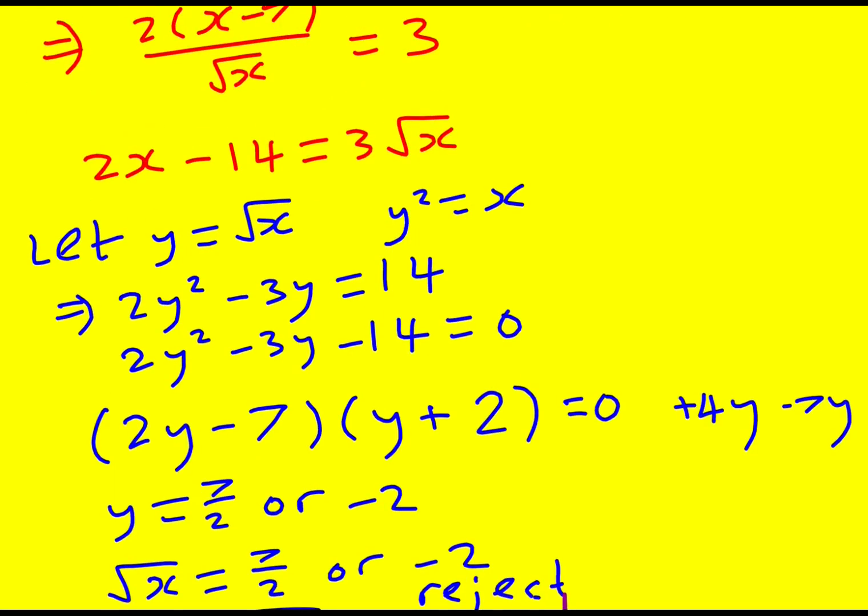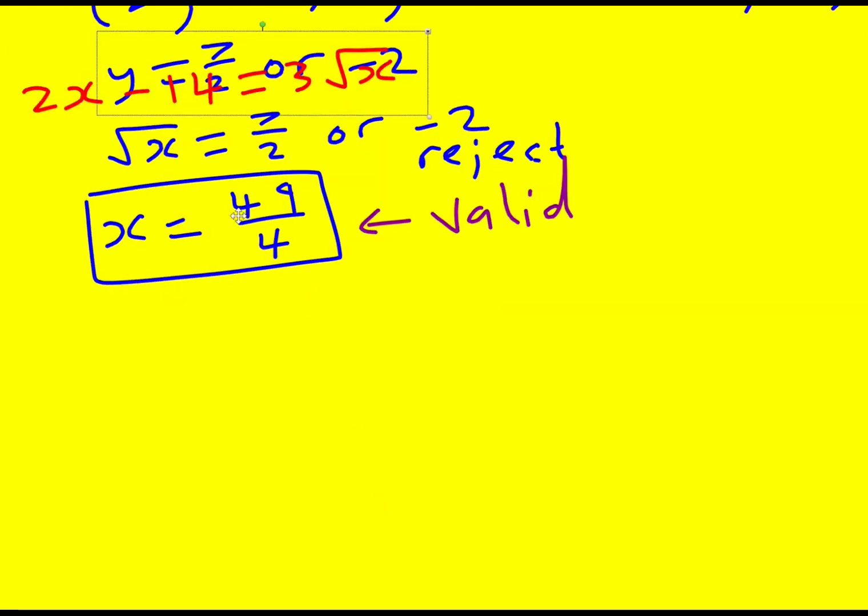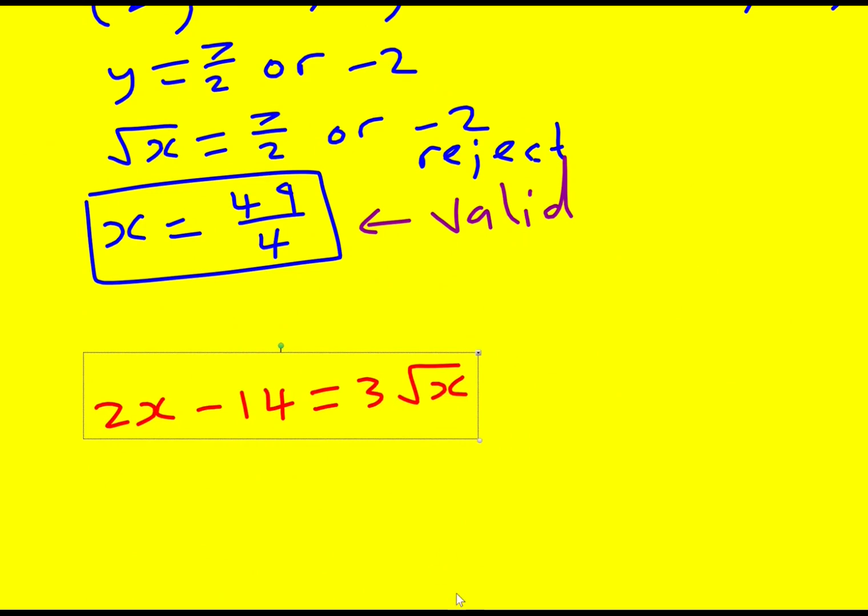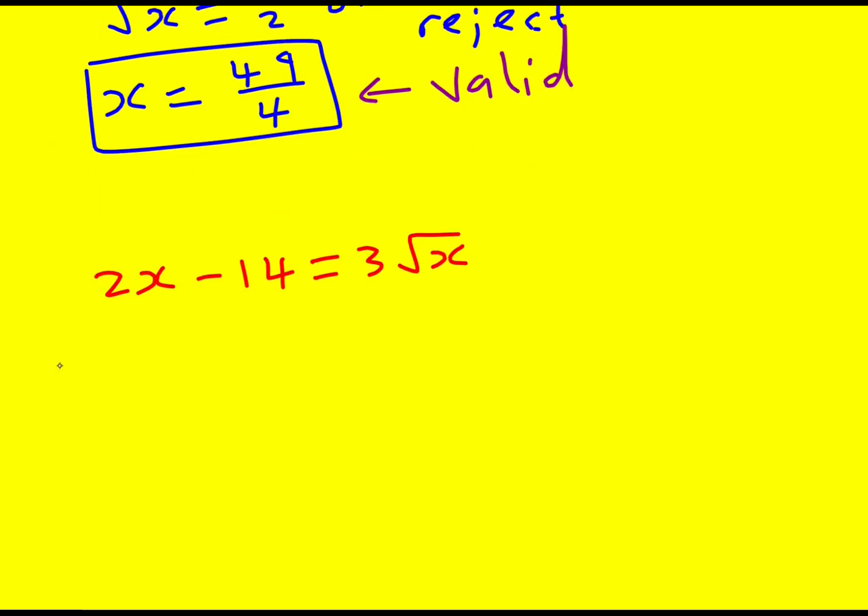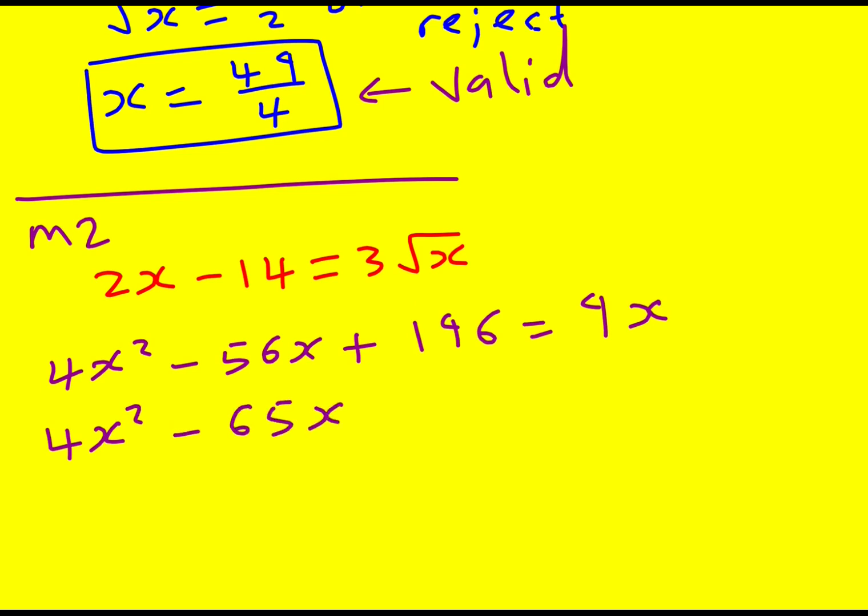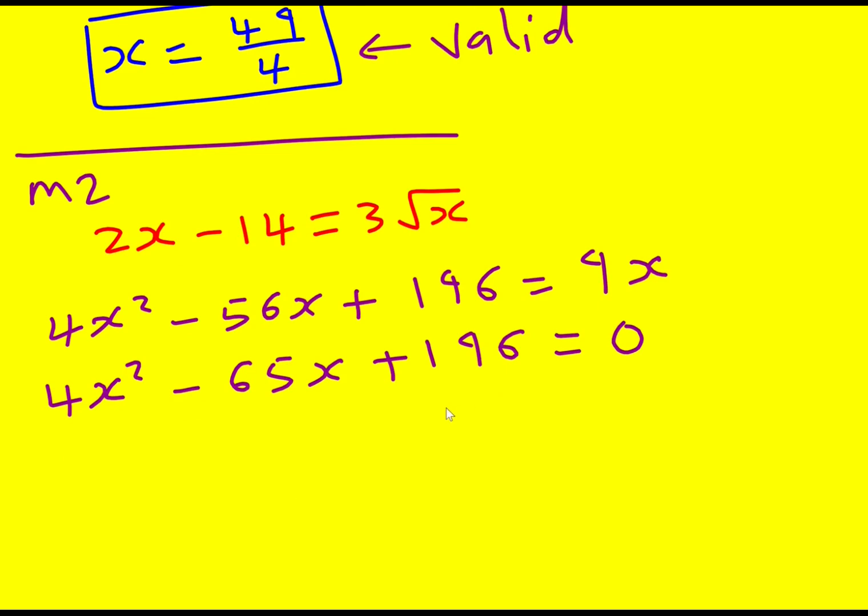I just want to take a little look what would happen if I didn't realize it was a hidden quadratic and I squared it. Of course you expect to get the same solutions, it's just whether we would get some more as well. So I could square both sides here. So this is kind of method 2. 4x squared, we're going to get minus 28x twice, so that's going to be minus 56x plus 14 times 14, which is 196, is equal to 9x. 4x squared minus 65x plus 196 is equal to 0.